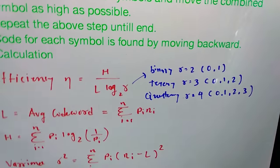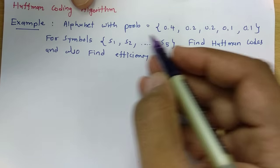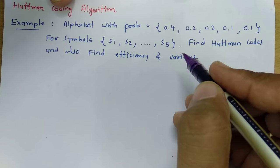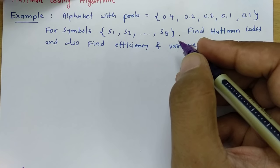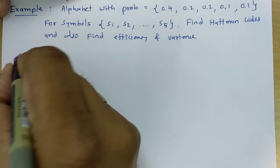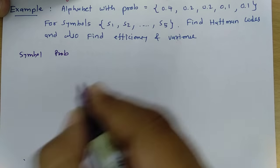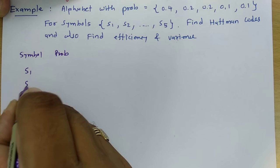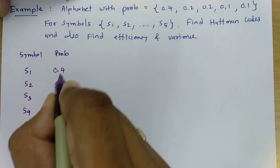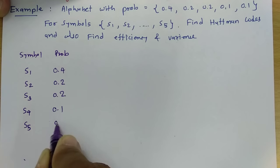Step by step, let us calculate this example. The question gives alphabets with probabilities 0.4, 0.2, 0.2, 0.1, and 0.1 for symbols S1 to S5. For Huffman coding, we first arrange probabilities in descending order. Here symbol and probability columns are set up, and the data is already in descending order: S1=0.4, S2=0.2, S3=0.2, S4=0.1, S5=0.1.